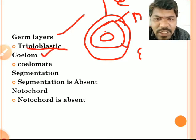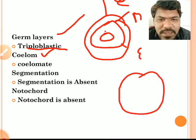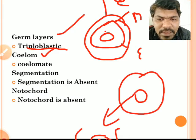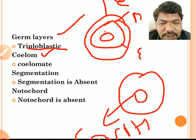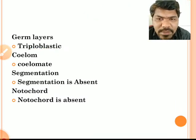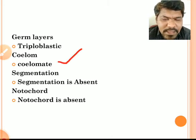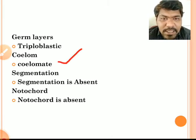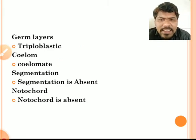Next, coelom. Coelom is the body cavity — specifically the cavity which is lined by mesoderm. Hemichordates contain a true coelom lined by mesoderm. Hence, hemichordates are also coelomates. Coelomates means animals which contain a true body cavity lined by mesoderm.